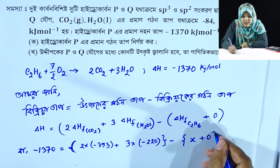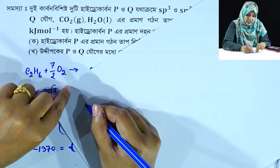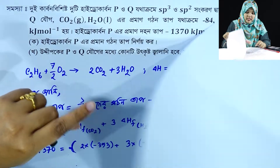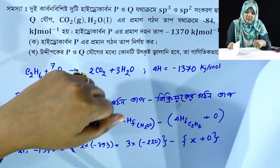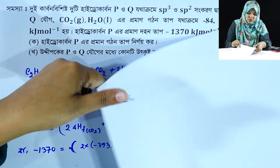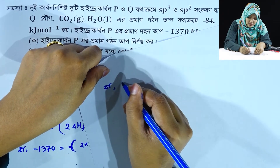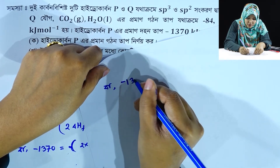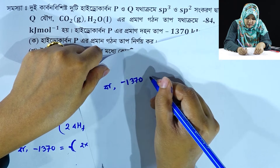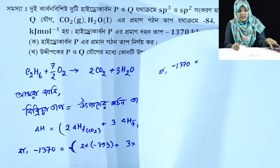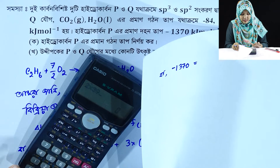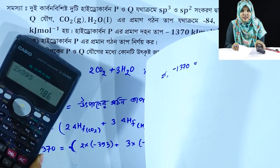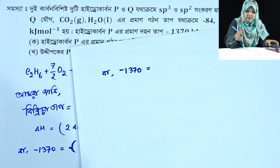1 plus 0. So we will do x in the same way — we will do the calculation. Minus 370 is equal to 2 into 393. 2 into 393 is equal to 786 — we will do minus 786.